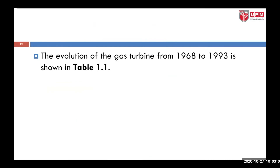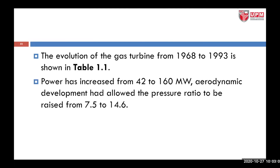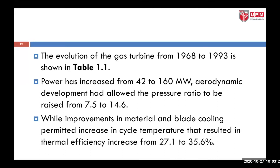The evolution of the gas turbine from 1968 to 1993 is shown in Table 1.1. Power has been increased from 42 megawatts to 160 megawatts. Aerodynamic development allowed the pressure ratio to be raised from 7.5 to 14.6, while improvements in materials and blade cooling permitted increases in cycle temperature.